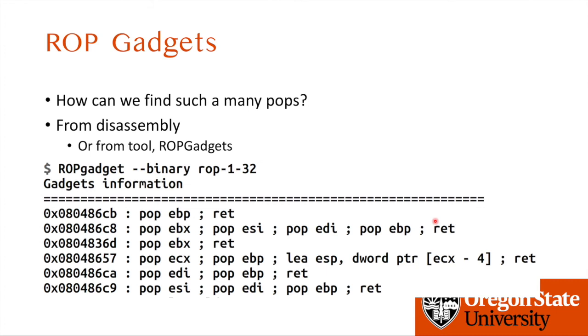You can find such gadgets by running the program ROPgadget — it's already installed in the system. Just run it with the option --binary and then the binary file name, and it will print out the gadgets. For calling setregid, you might need two pops and return to pop the two arguments. For execve, you can apply pop, pop, pop, return to clear all three arguments.